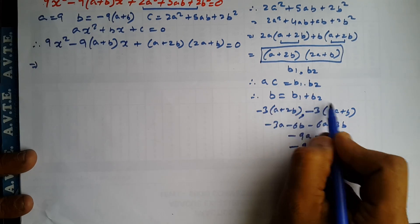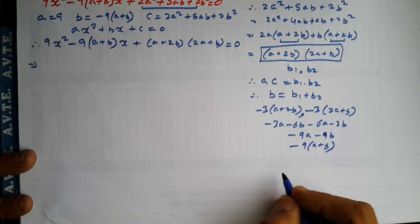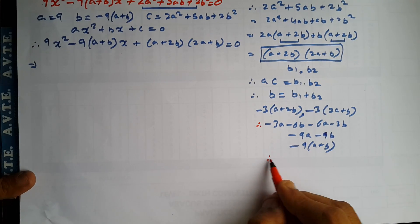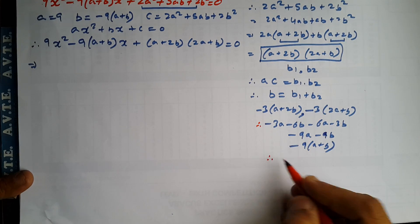When you multiply them minus 3 into minus 3. You're not supposed to change the color. Minus 3 into minus 3 is 9.